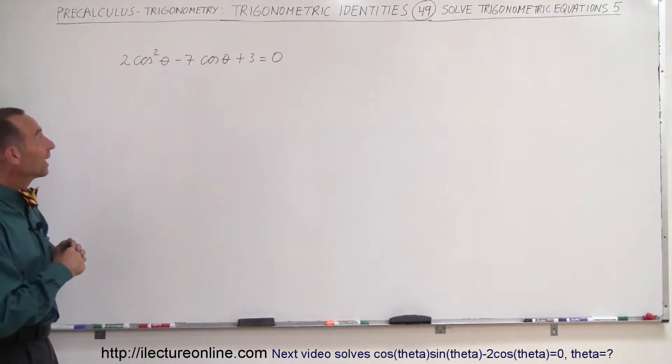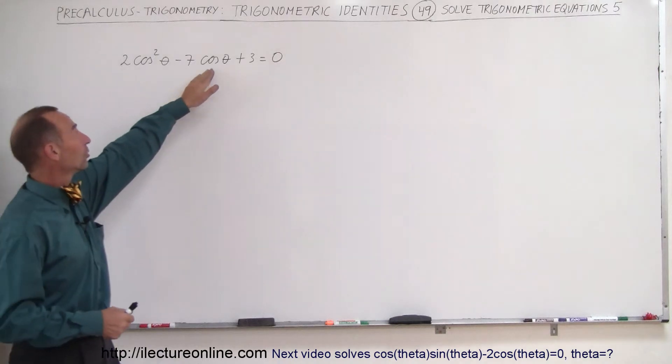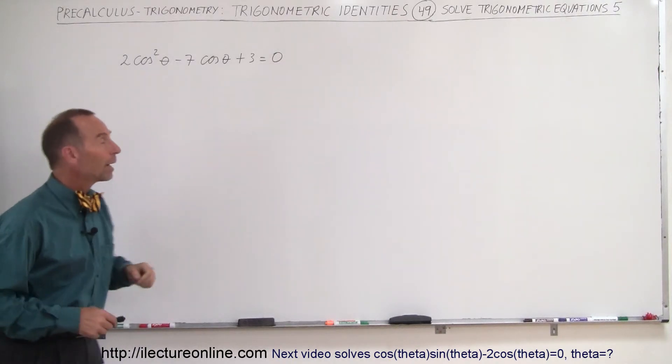Hey, welcome to Electron Line, and here again it looks like we have a quadratic equation. We have a cosine squared theta, cosine of theta, and cosine to the zero power.